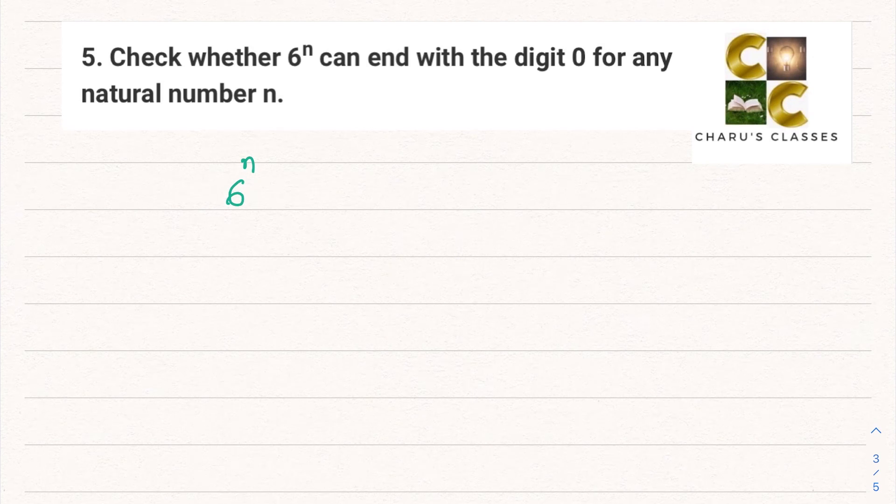So if I just look at the powers of 6, then I know 6^1 is 6. 6^2, that is 6 × 6, is 36. 6^3, that is 36 × 6, is 216.